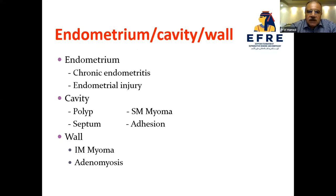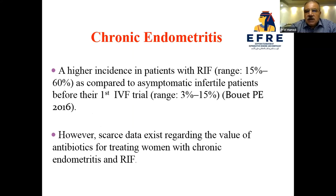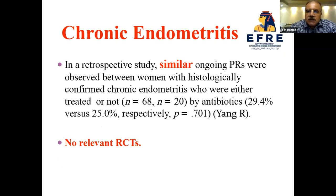Regarding the endometrium, we consider the role of chronic endometritis and endometrial injury. Chronic endometritis has a higher incidence in RIF patients, ranging from 15 to 60 percent, compared to asymptomatic infertile patients before their first IVF trial. However, scarce data exists regarding the value of antibiotics for treating women with chronic endometritis and RIF. In a retrospective study, similar ongoing pregnancy rates were observed whether or not women with histologically confirmed chronic endometritis were treated with antibiotics.